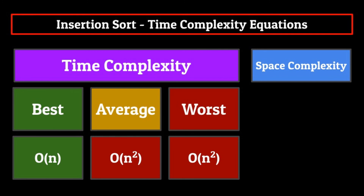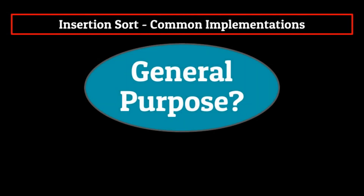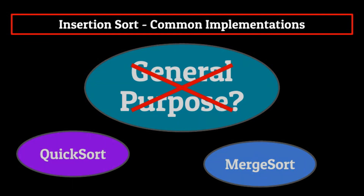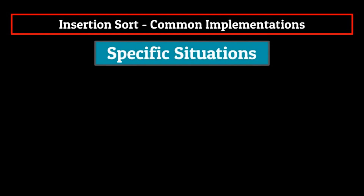In addition to this, insertion sort also has a worst case scenario space complexity of O(1). This is simply because there's no need to allocate any extraneous memory, as insertion sort is an in-place algorithm. Now you might be thinking to yourself: this algorithm seems pretty terrible, there's no way that this gets any use in computer science. Well, you're partially right. As a general purpose sorting algorithm, you're not going to use insertion sort. There are way better and faster algorithms out there that we've already covered, such as quick sort, merge sort, etc. Where insertion sort excels, however, is in specific certain situations.